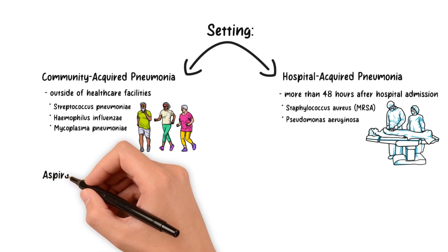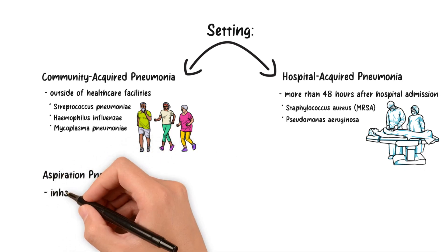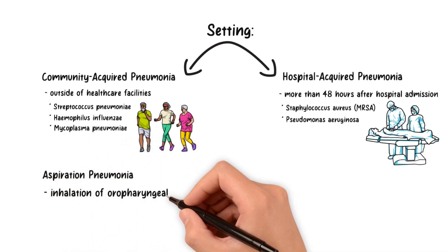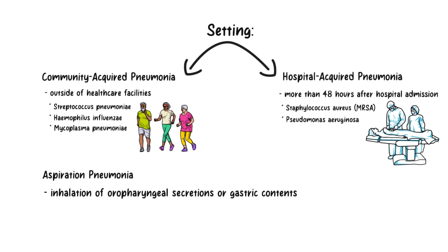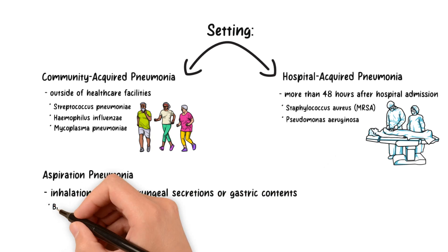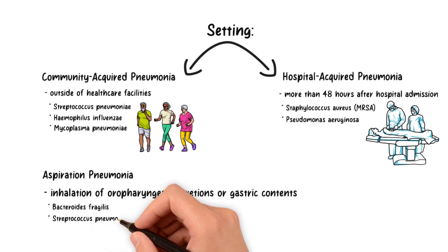Aspiration pneumonia results from the inhalation of oropharyngeal secretions or gastric contents. It can lead to infections by anaerobic bacteria like Bacteroides fragilis or Streptococcus pneumoniae.